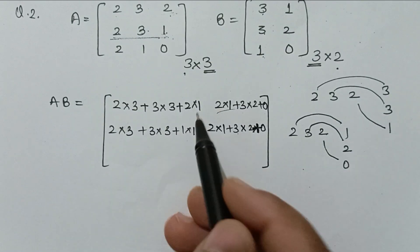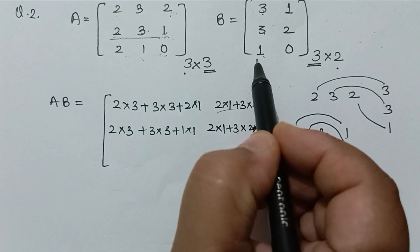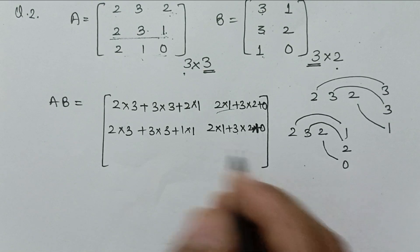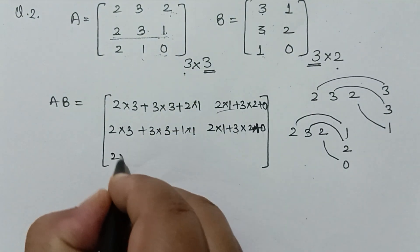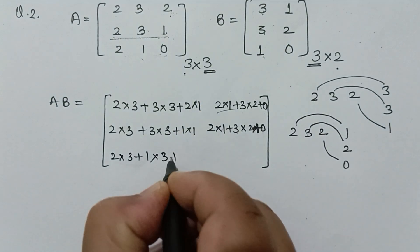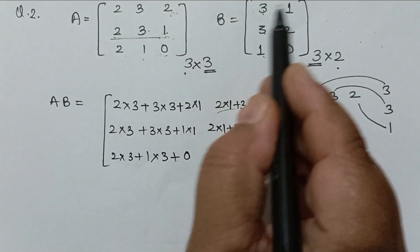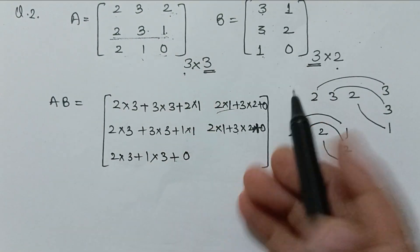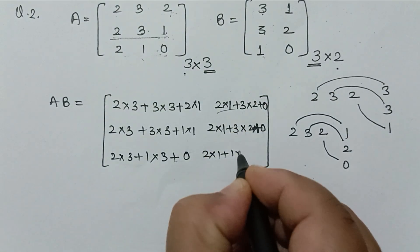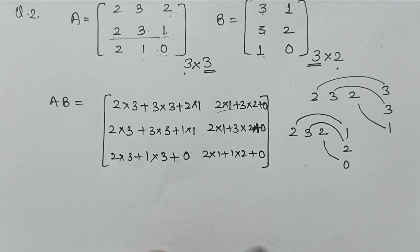Now we take the third row. Third row with first column gives 2x3 plus 1x3 plus 0x1, which is 0. Third row with second column gives 2x1 plus 1x2 plus 0x0, which is 0. This completes the resultant matrix AB.